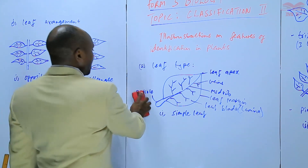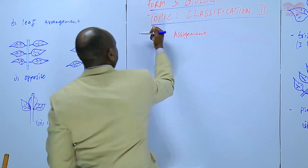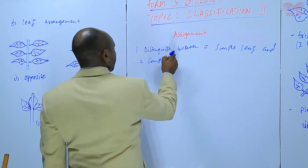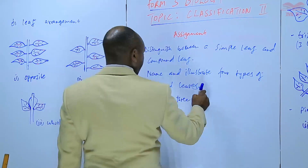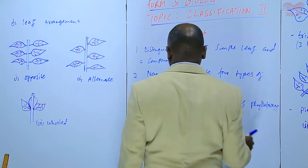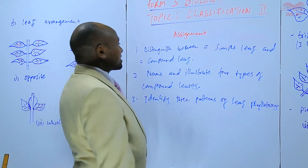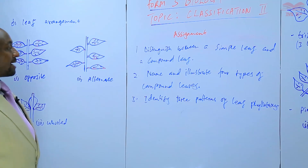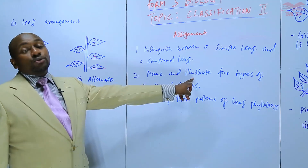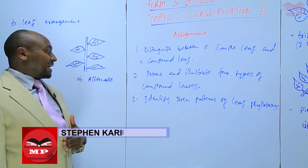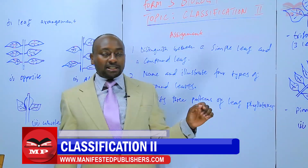So at that point we can have an assignment. Number one: distinguish between a simple leaf and a compound leaf. Number two: name and illustrate four types of compound leaves — to illustrate is by use of a diagram. And number three: identify three patterns of leaf phyllotaxy.